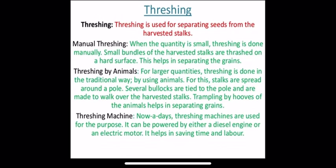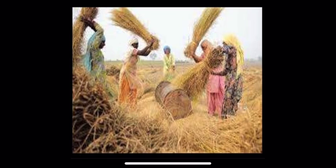In the third method, threshing machines are used. Nowadays, threshing machines are used for this purpose. They can be powered by either a diesel engine or an electric motor, and help in saving time and labor. In this picture, you can see manual threshing being done with a bundle of stalks. I hope these two methods of separation are clear to all of you. Thank you.